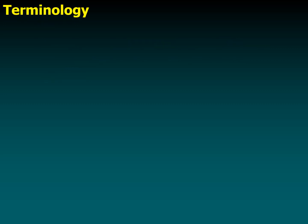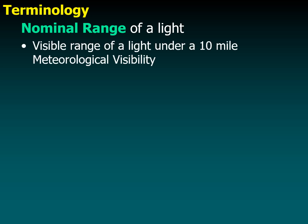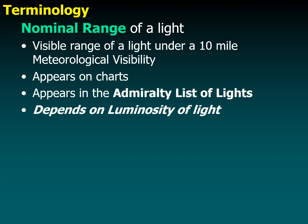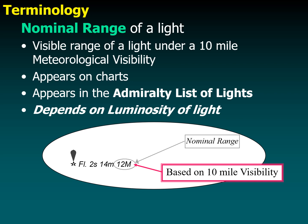Let's get familiar with some terminology used in rising and dipping of lights. The first is the nominal range of a light. The nominal range is the range at which a light may be seen under a meteorological visibility of 10 nautical miles. It is the range of the light as indicated on the chart as well as in the admiralty list of lights, and depends on the luminosity of the light. For example, the nominal range of a light is shown here as 12 nautical miles, which is based on a 10-mile visibility.